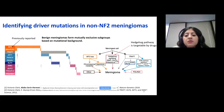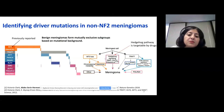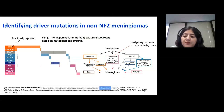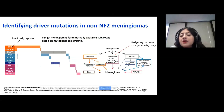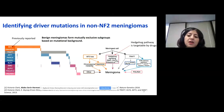So finally, we were able to summarize meningiomas based on five main driver mutations: meningiomas with NF2 mutation, meningiomas with Hedgehog pathway mutations, meningiomas with TRAF7 and KLF4 mutations, meningiomas with TRAF7 and PIK3CA pathway mutations, and meningiomas with POLR2A mutations. We observed that TRAF7 and KLF4 usually co-occur and TRAF7 and PIK3CA pathway mutations also co-occur. The Hedgehog pathway group was the most clinically interesting because researchers had previously developed drugs for targeting the Hedgehog pathway.